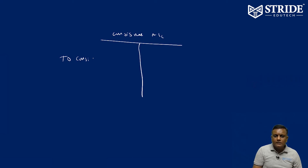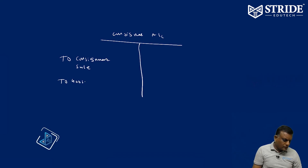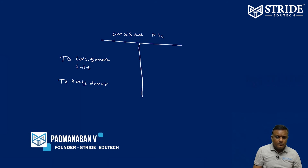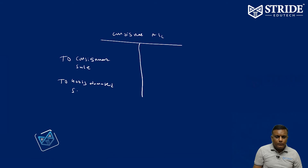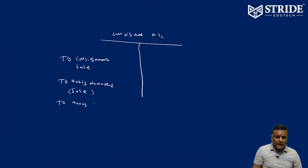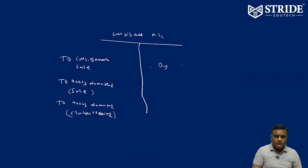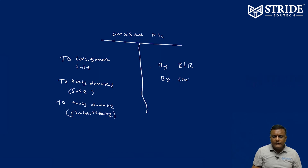For the consignor, the consignee is just like a debtor. On the debit side of the consignee account: to consignment sales to be debited; to goods damaged — both normal and abnormal sales; any claim received by the consignee.